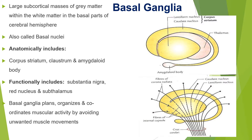Basal ganglia, otherwise known as basal nuclei, are large subcortical masses of gray matter within the white matter in the basal parts of cerebral hemispheres. A ganglion is a collection of cell bodies of neurons. Hence, these subcortical masses of gray matter found in the basal parts of cerebral hemispheres are called basal ganglia or basal nuclei.